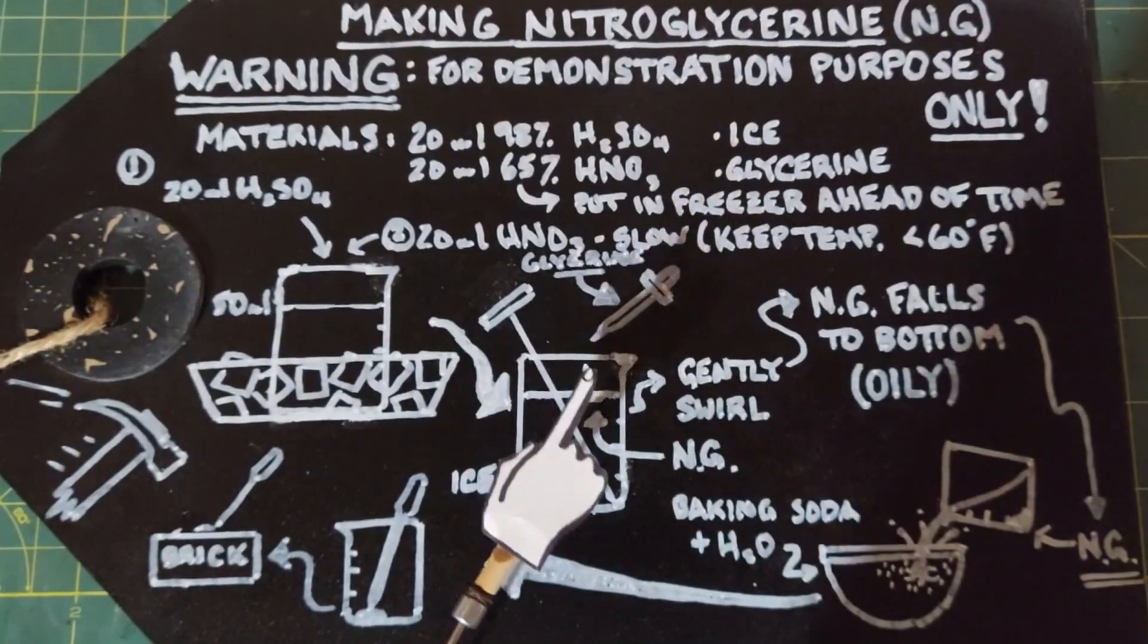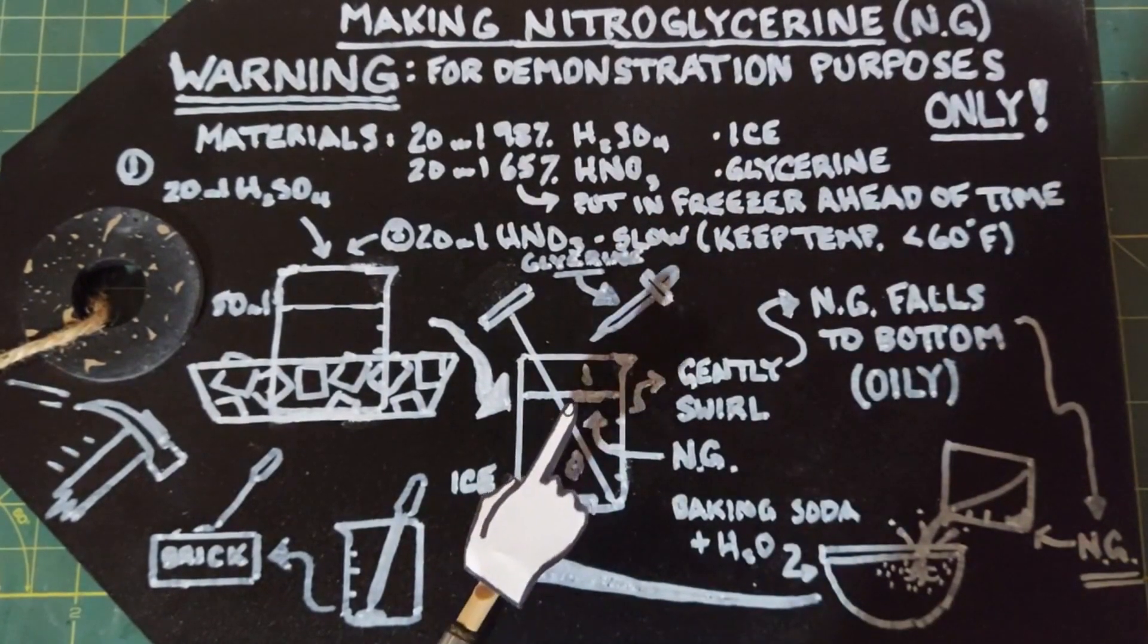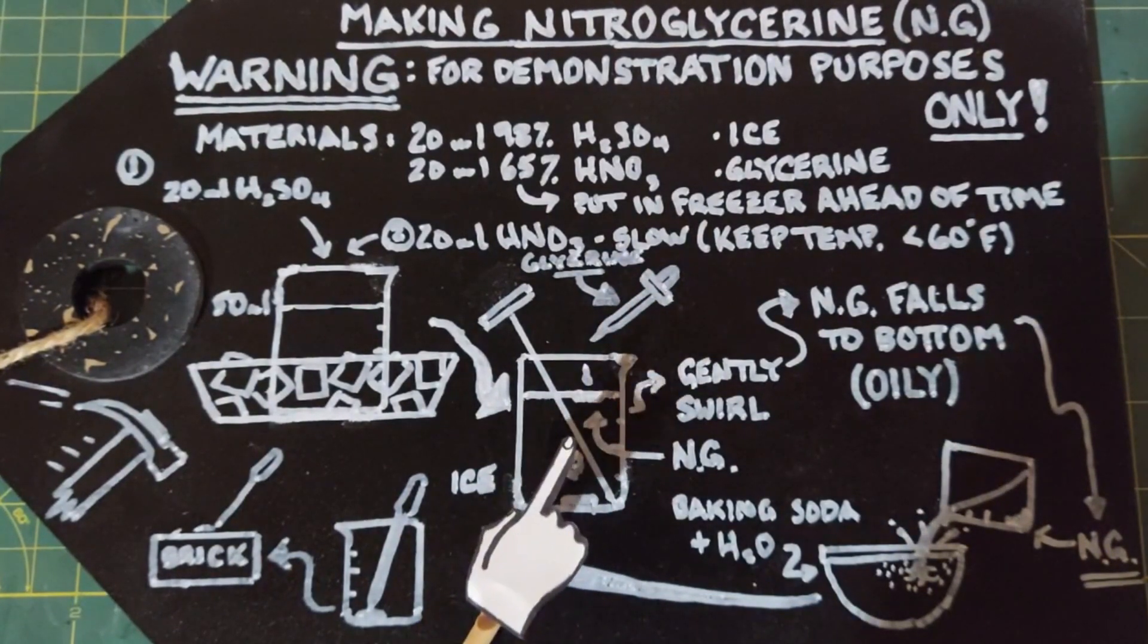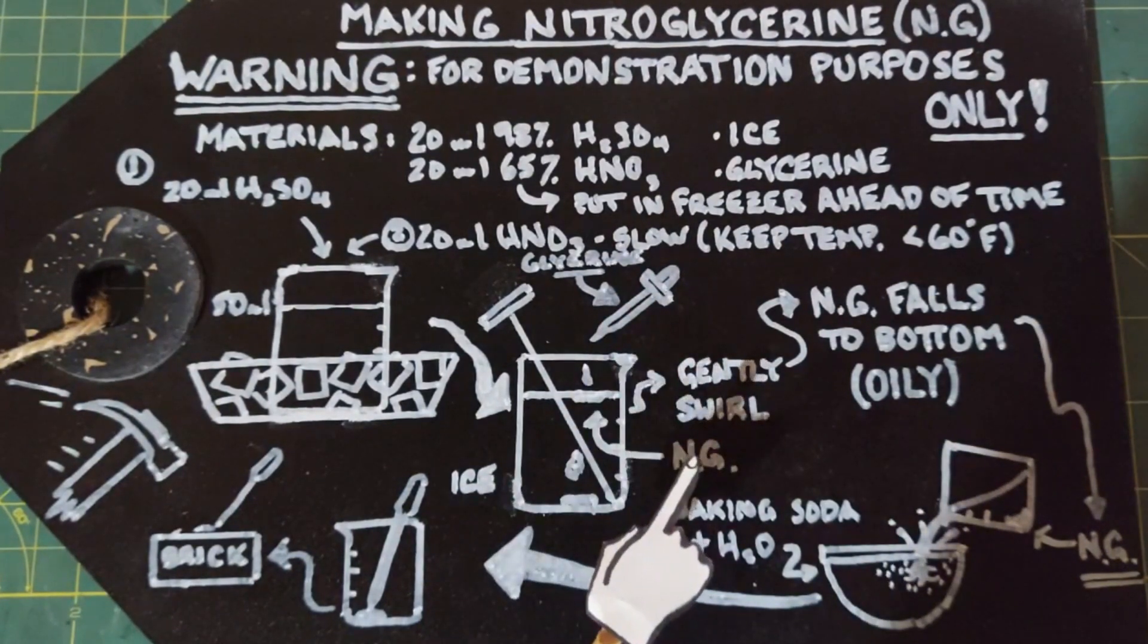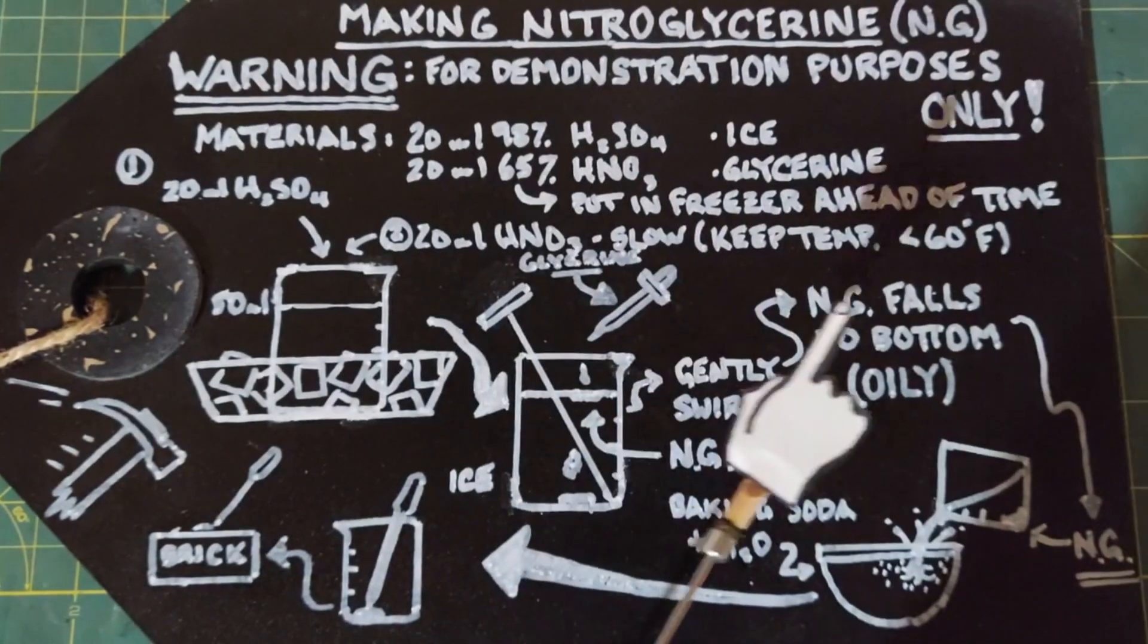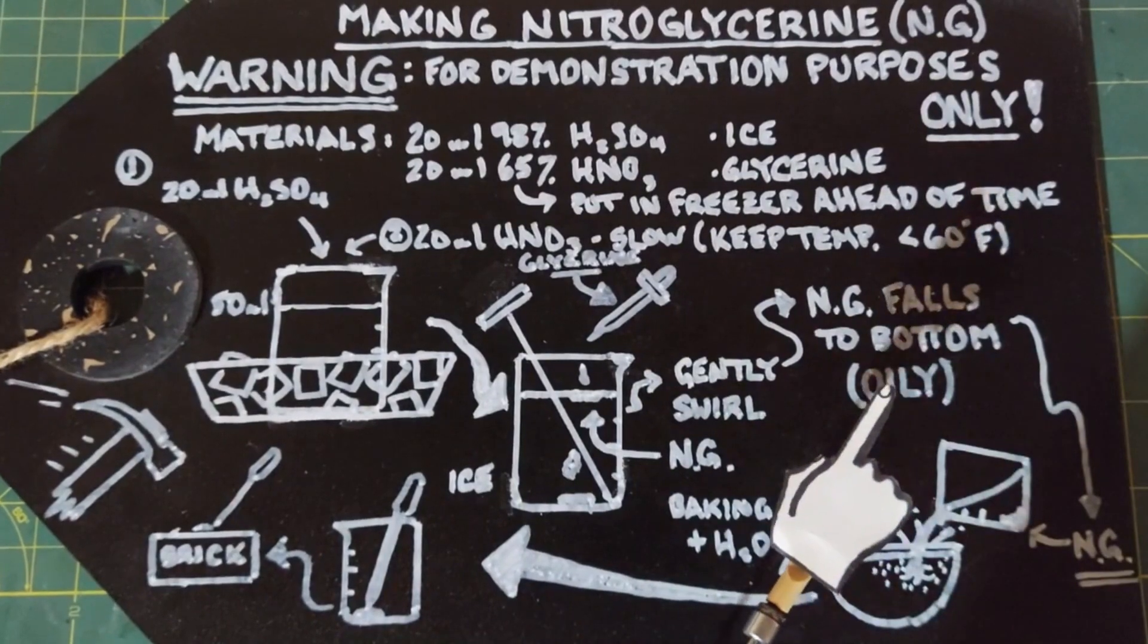Once you start dripping the glycerin into the solution here, you will notice that a substance starts forming that has a different light refraction than the solution and that is your nitroglycerin already forming. If you gently swirl this around, most of that should fall to the bottom. Once it falls to the bottom, you will notice it has somewhat of an oily appearance.